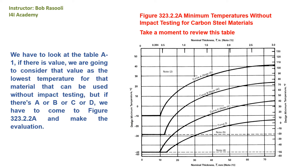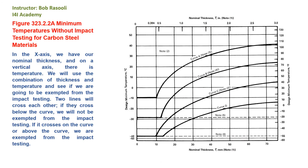We have to look at Table A1. If there is a value, we consider that value the lowest temperature for that material that can be used without impact testing. But if there's A, B, C, or D, we have to go to Figure 323.2.2A and make the evaluation. That figure shows Minimum Temperatures Without Impact Testing for Carbon Steel Materials — the x-axis is nominal thickness and the vertical axis is temperature. We use the combination of thickness and temperature to see if we are exempted from impact testing.